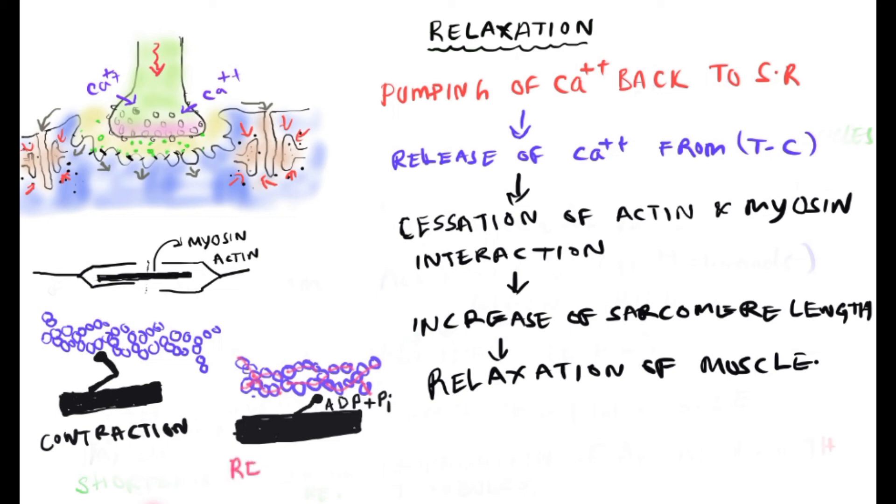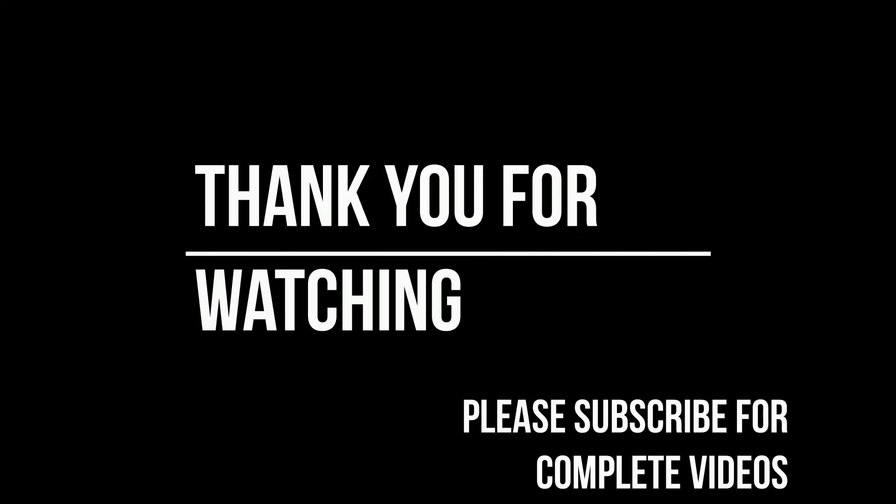ATP splitting energizes the myosin head, relaxing it and preparing for the next cross-bridge formation. This is the re-cocked position. Tropomyosin usually covers the actin filaments in the resting phase, and acetylcholinesterase breaks down acetylcholine to prepare for the next contraction.